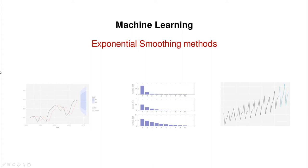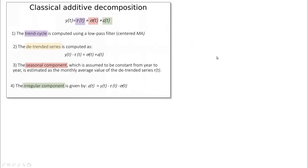Hi everyone! This is the last video in the series of basic methods for forecasting and we're going to talk about exponential smoothing methods. If you remember from the previous videos, we described classical additive decomposition — the idea was to infer the trend using a centered moving average, then create a detrended series, and from that extract the seasonal component and so on.